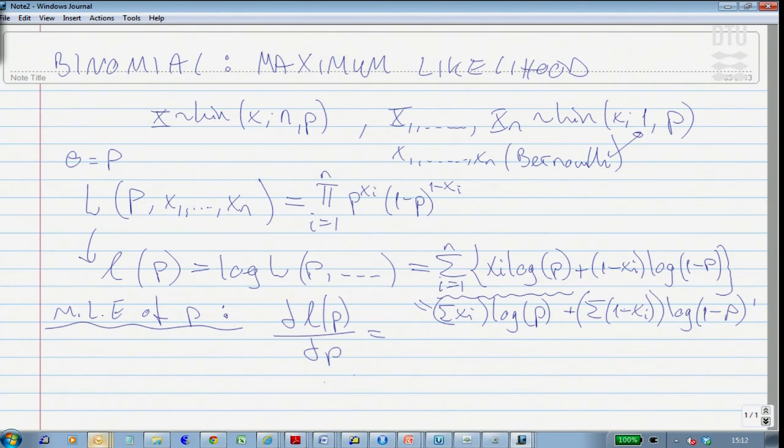Now, I do the derivative of this. The derivative of log p is 1 over p. And then I have the constant, because seen as a function of p, the data is just constants. It's just something plugged into the function. It's just the sum of the xi. What about the second term here?